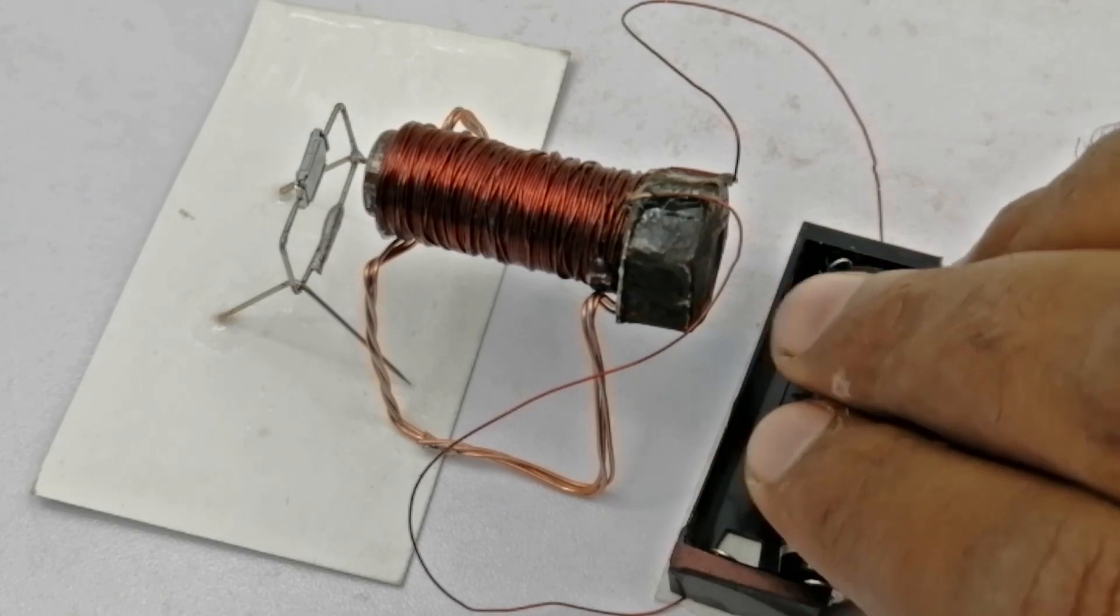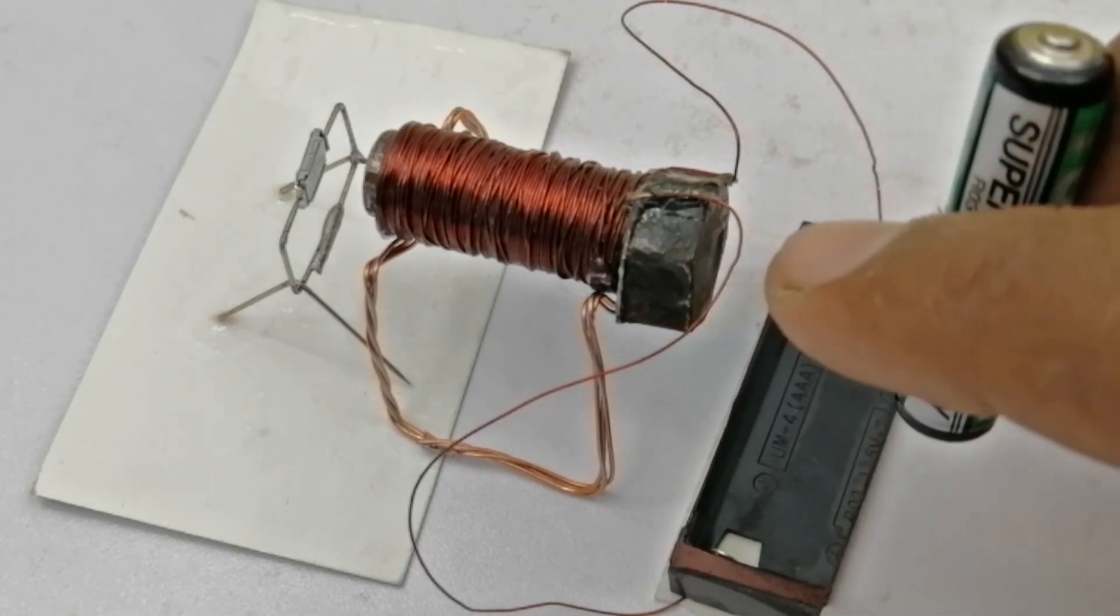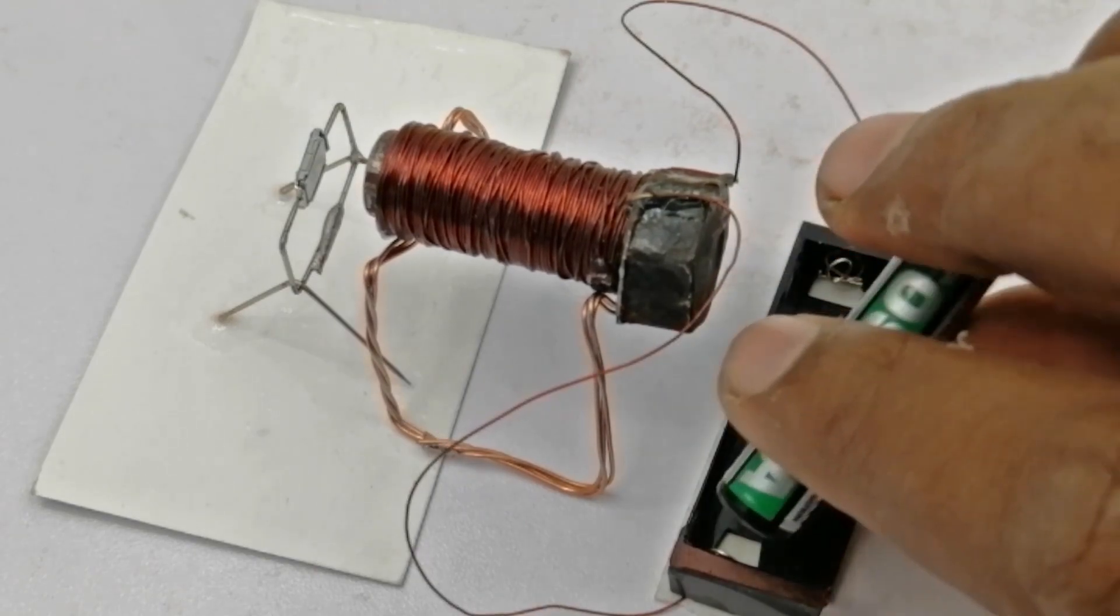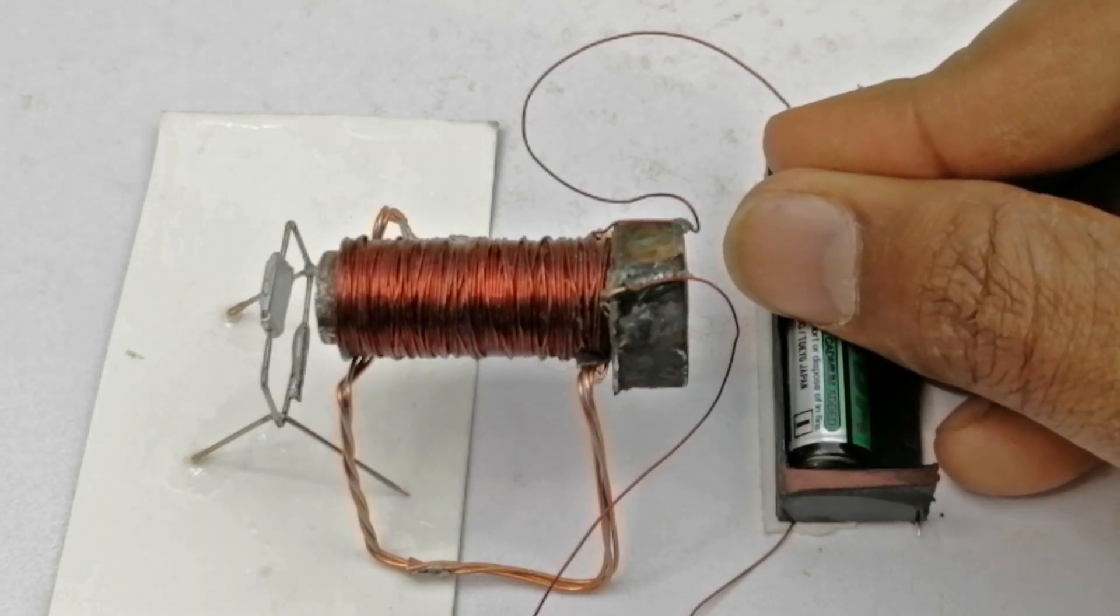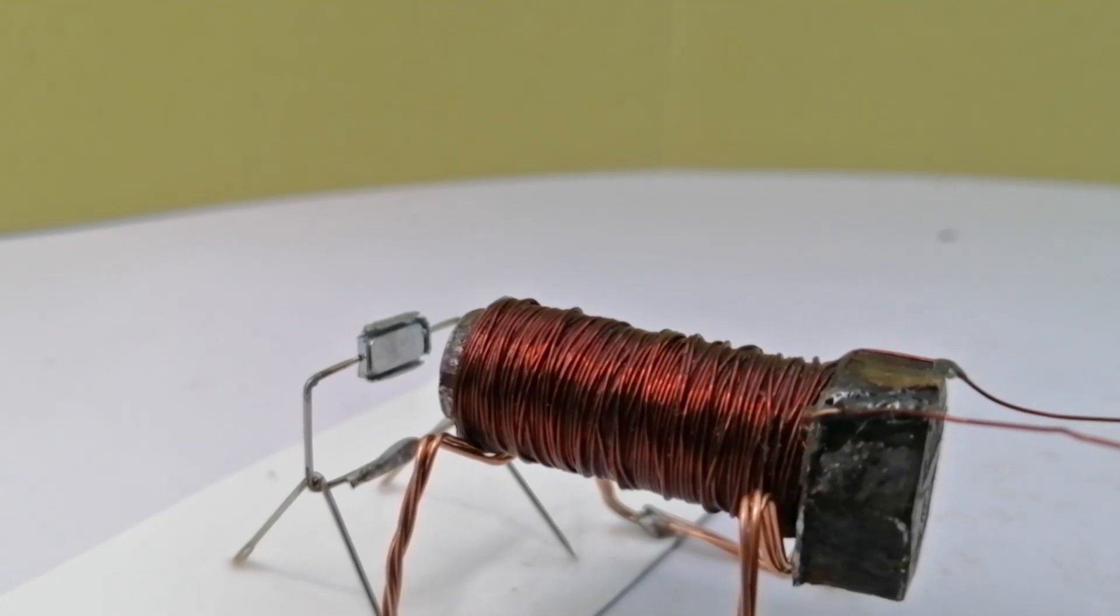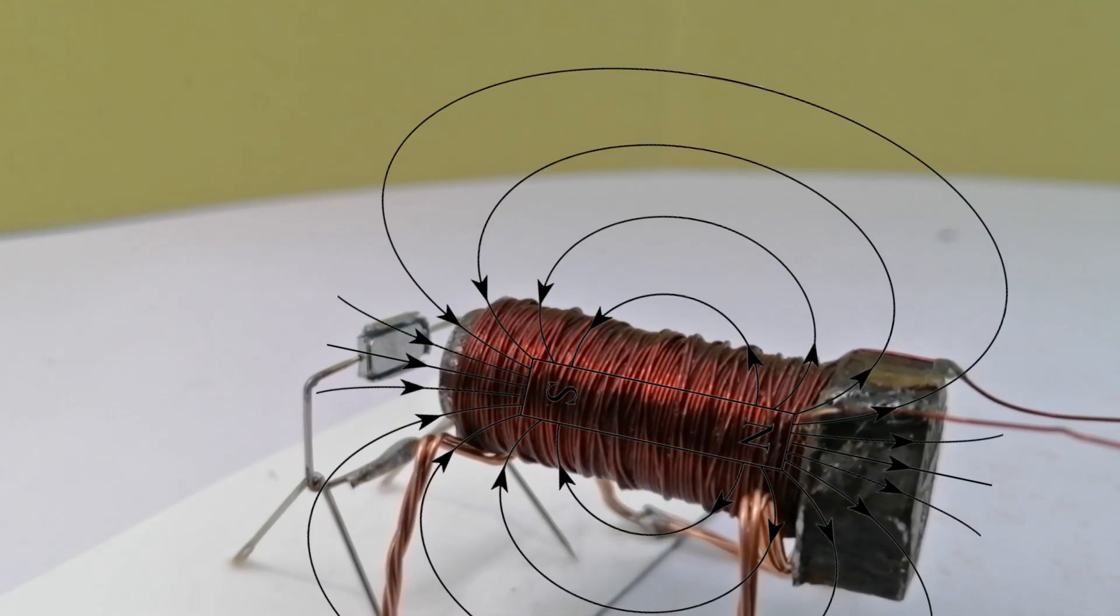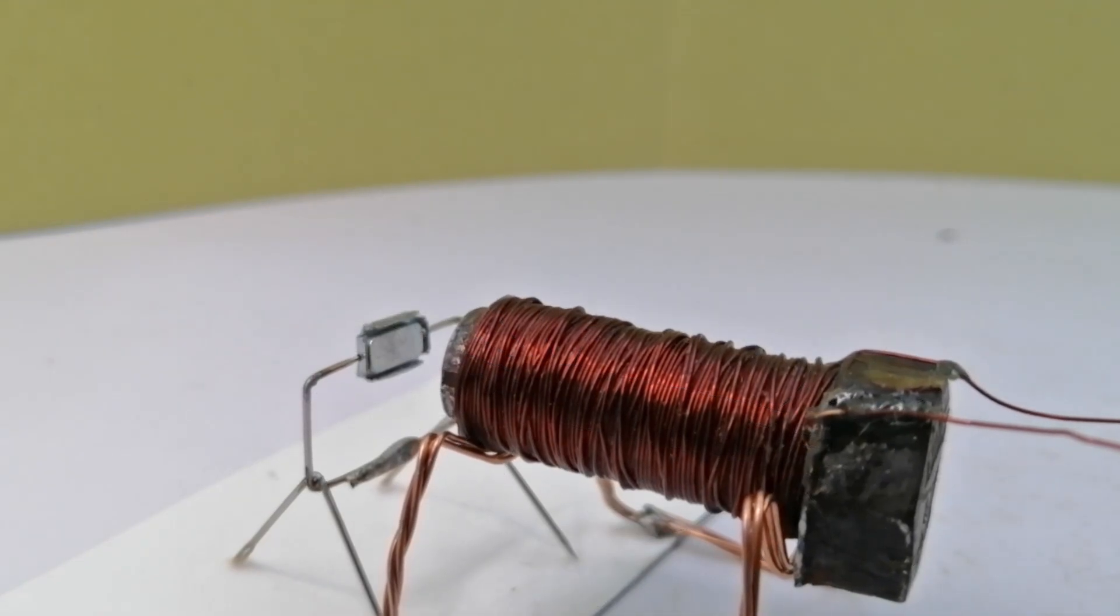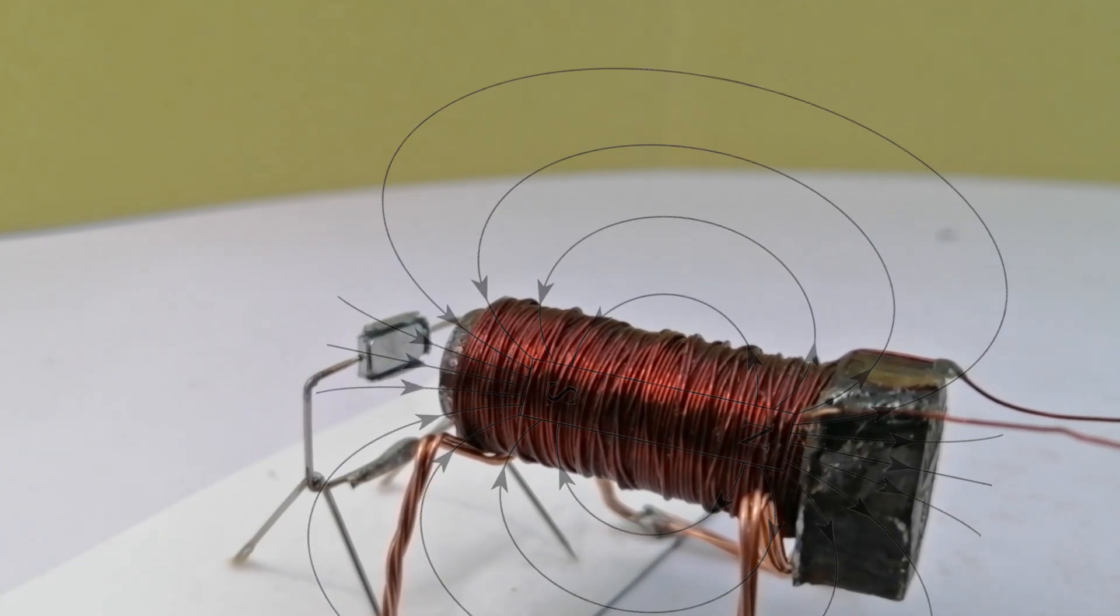Now we change the direction of the battery cell to change the direction of the current. And see, wow, the magnet changed direction again. Friends, whenever we change the direction of current, the transient magnet also changes its magnetic field's direction, forcing the independent magnet to change its direction.